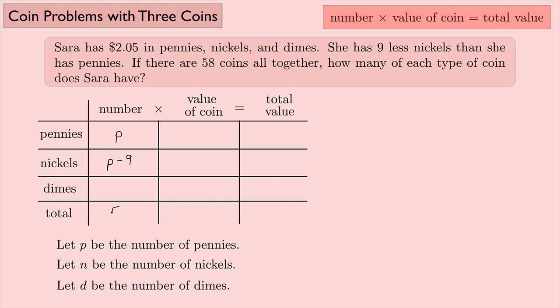What else do we know? There are 58 coins altogether, so I can put 58 here. Now we need to figure out dimes. This can be a little bit tricky. If I add up the number of pennies, nickels, and dimes, I should get 58. In other words, if I add up the pennies plus the nickels, which are P minus 9, plus the number of dimes, I should get 58.